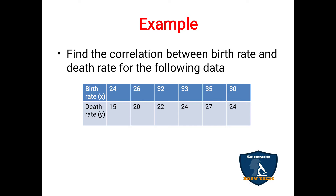Find the correlation between birth rate and death rate for the following data. Birth rate: 24, 26, 32, 33, 35, 30. Death rate: 15, 20, 22, 24, 27, 24. They will give only birth rate and death rate — you have to take any one as x and the other variable as y. Here, birth rate you can take as x variable and death rate you can take as y variable.